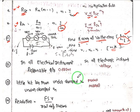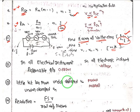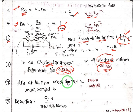Very important: in all electrical instruments, the responsible quantity is current. For electronic instruments, the responsible quantity is voltage. This is very very important.